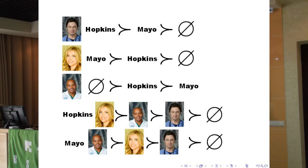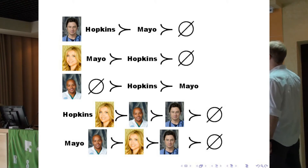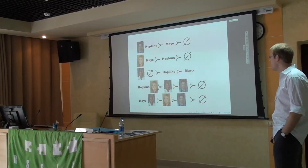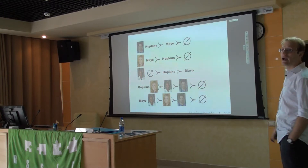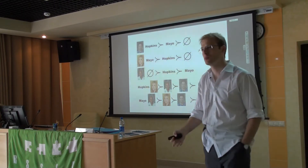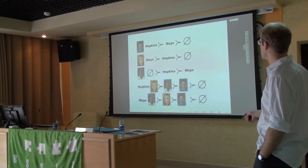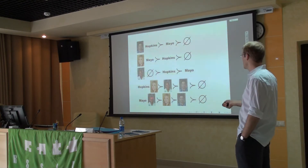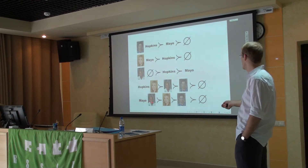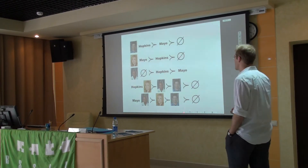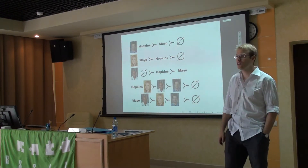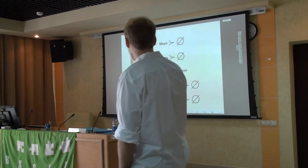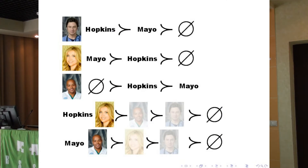Hopkins wants to hire Elliot, followed by Turk, followed by JD, followed by having no slot. Mayo really wants to get Turk - remember, the really lazy one who doesn't want to work at all, but Mayo thinks he is a fantastic doctor, one of those superstars that ends up dropping out and going to do economics. Then followed by Elliot, followed by JD. You can see how JD is just not the desirable doctor. So the hospitals first propose to their favorite doctors: Elliot receives an offer from Hopkins and Turk receives an offer from Mayo.